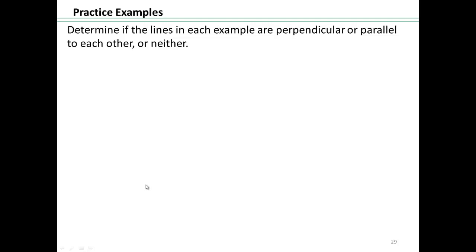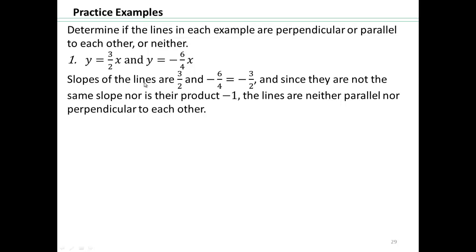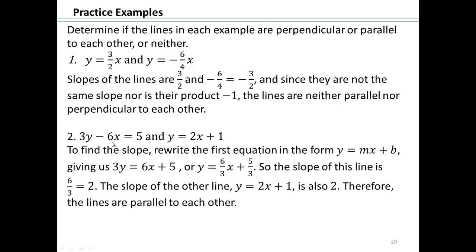Determine if each pair of lines is perpendicular, parallel, or neither. For these two lines: if you reduce the slope you get negative 3 halves, and this slope is 3 halves. They are not the same slope and are not negative reciprocals of each other — their product is not negative 1 — so they are neither parallel nor perpendicular. For these two lines: simplifying gives a slope of 6 thirds x, and 6 over 3 is 2. Both lines have slope 2, so they are parallel to each other.